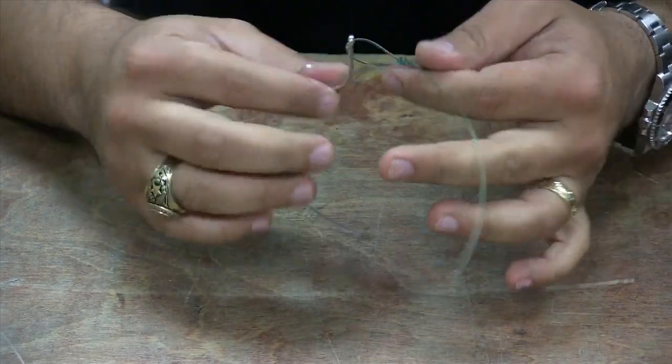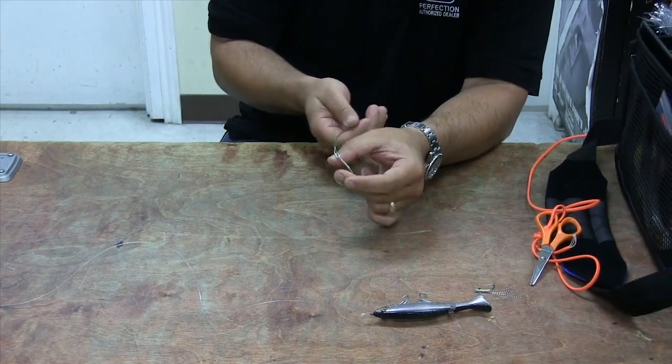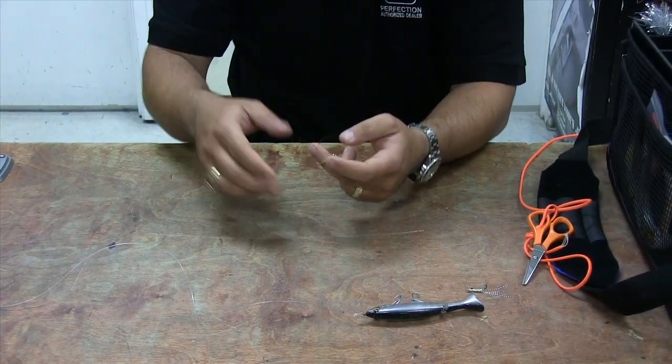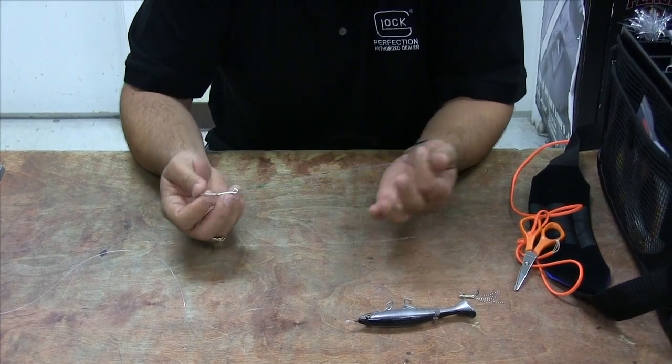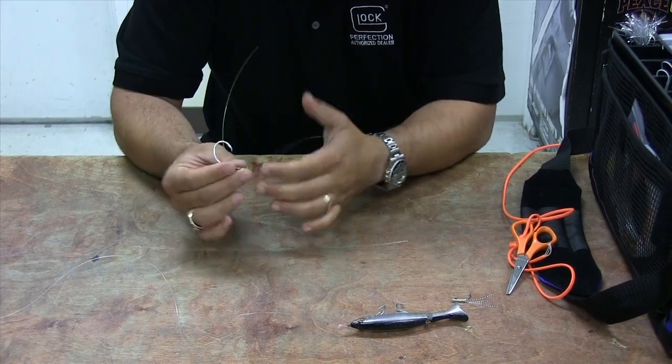With circle hooks, it works real well. It helps preserve that action. It helps as the fish is coming away from you and has the circle hook. It helps really grab the circle, bury it in. You can trim the tag pretty close on this. It stays nice and weedless.